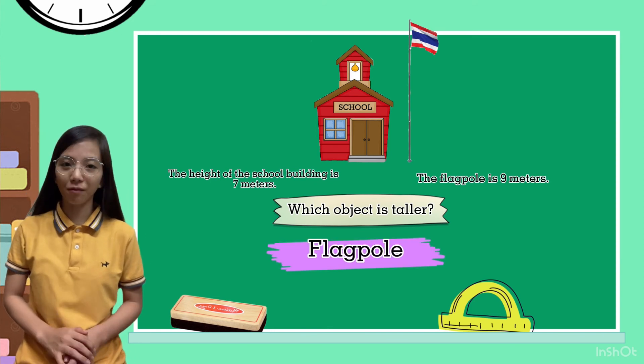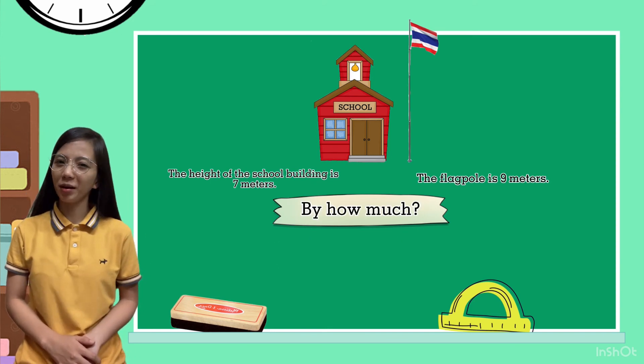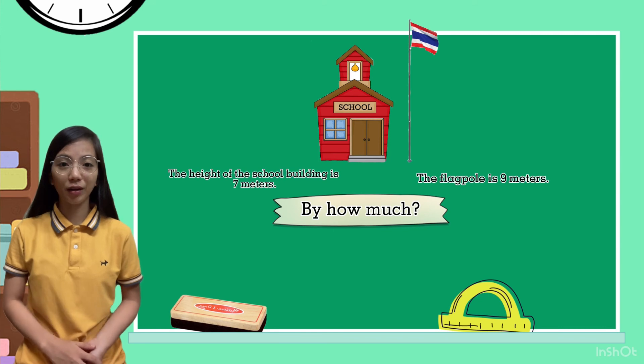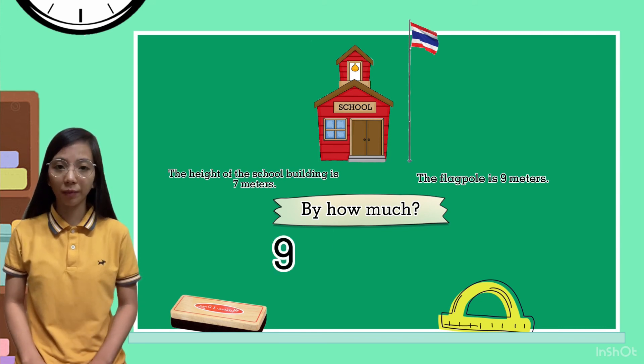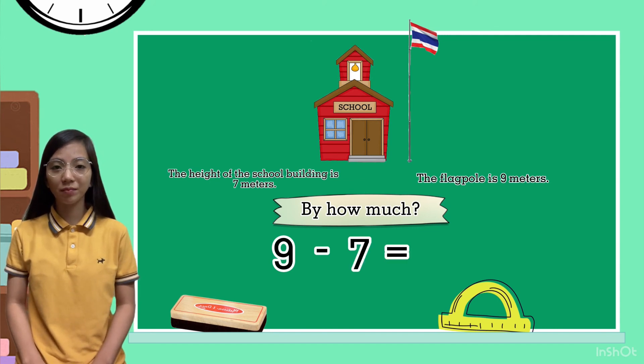The answer is the flagpole. By how much? So, we are going to subtract, 9 meters minus 7 meters equals 2 meters tall.